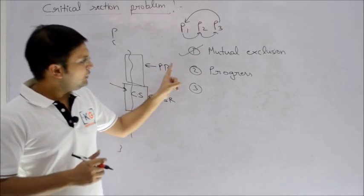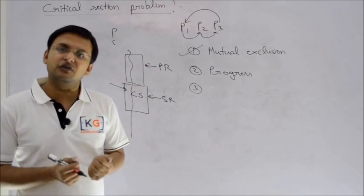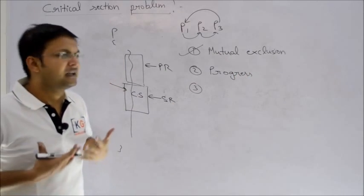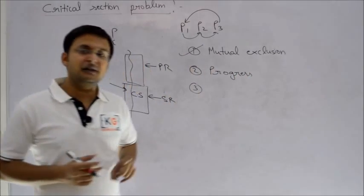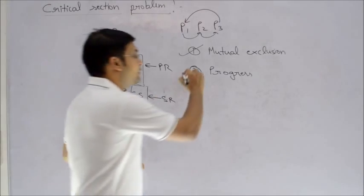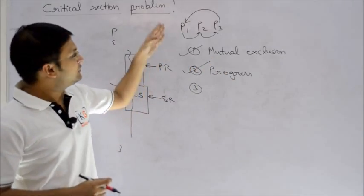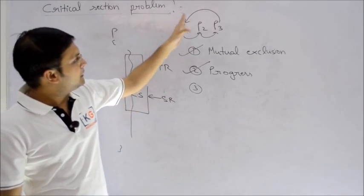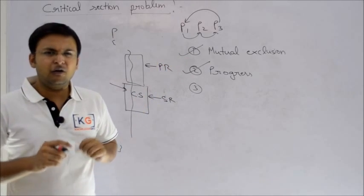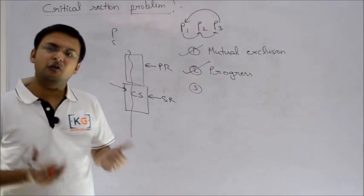So what progress says is that only those processes should compete or should be in the race to enter into critical section, those who actually want to. You don't have to force a process in critical section competition if they don't want to enter. You better understand that is also mandatory criteria. If your solution tries to follow round robin for P1, P2, P3, then I will say that solution will not hold good.